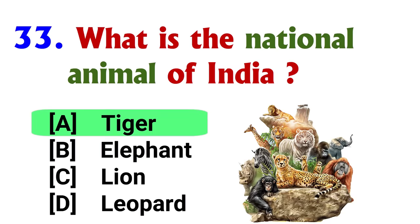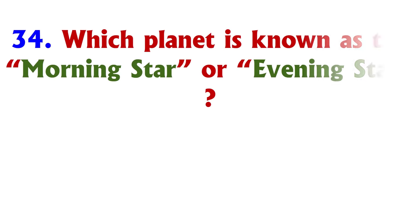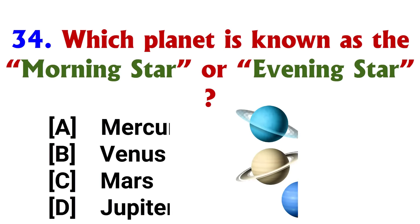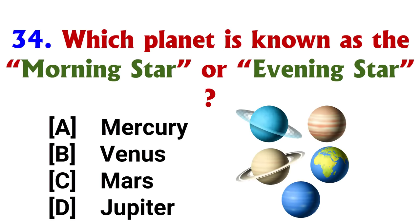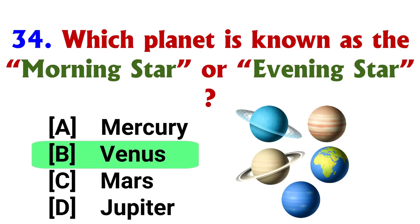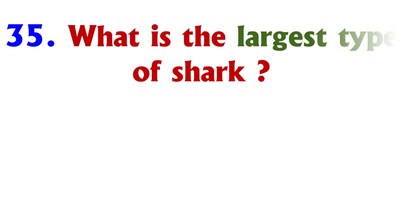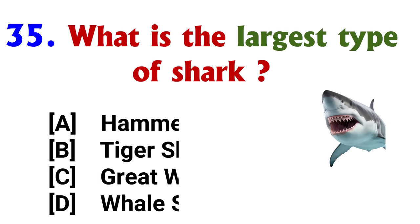What is the national animal of India? Answer: option A, Tiger. Which planet is known as the morning star or evening star? Answer: option B, Venus.